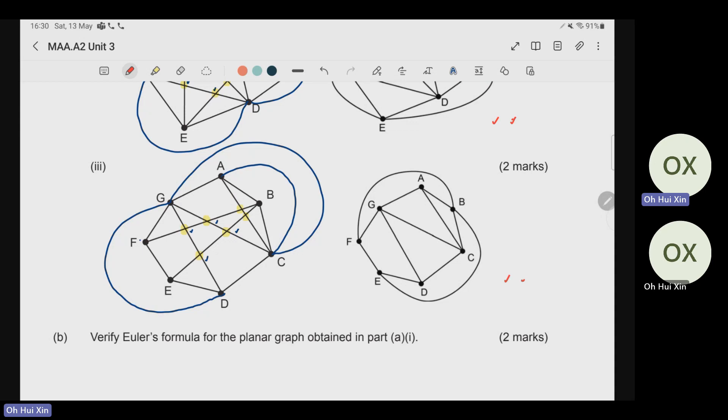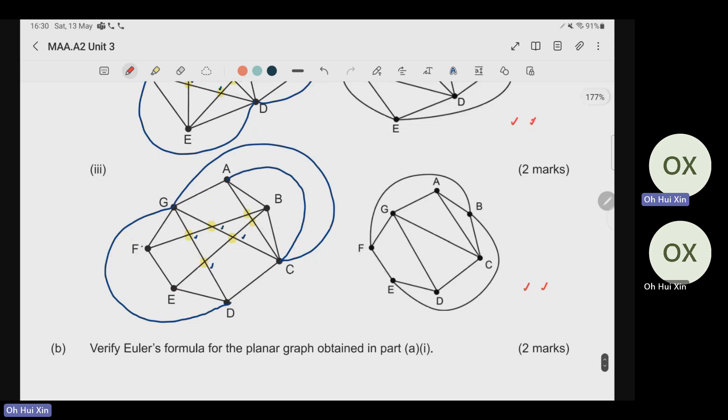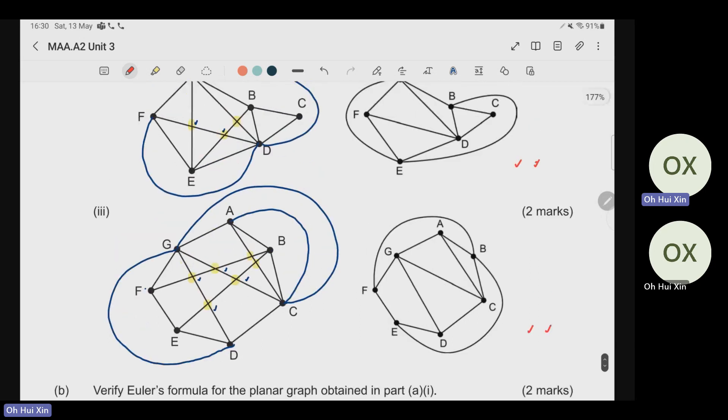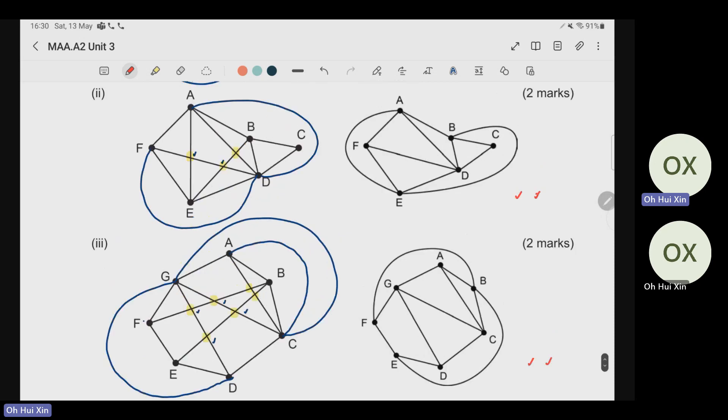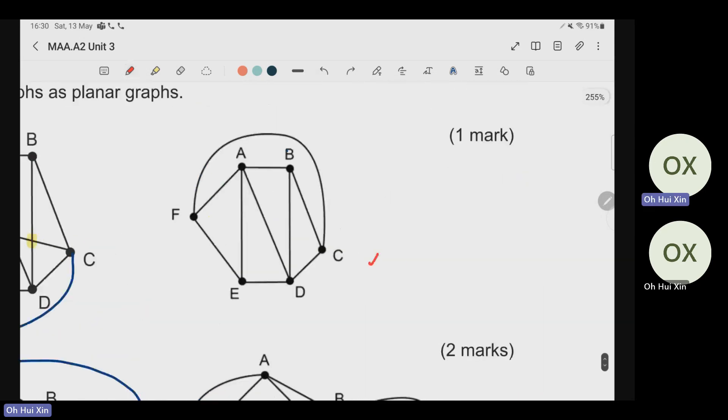After that, let's look at part B. Verify Euler's rule. The only thing that you need to be careful for Euler's rule is that it only applies for all the graphs that you have redrawn it. Which means that you cannot do it on the original graph. You must have it for the graph that you have already redrawn.